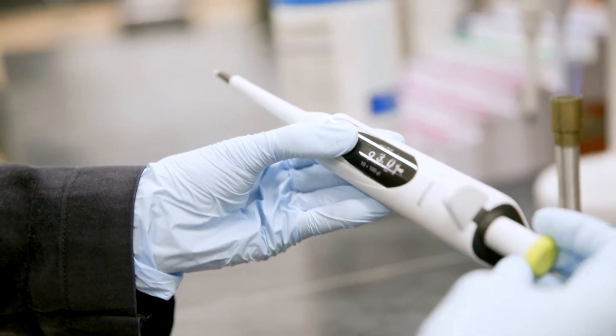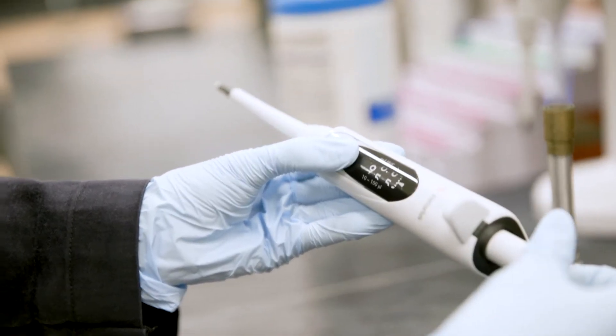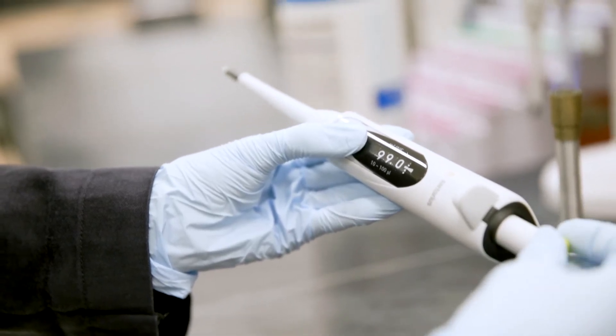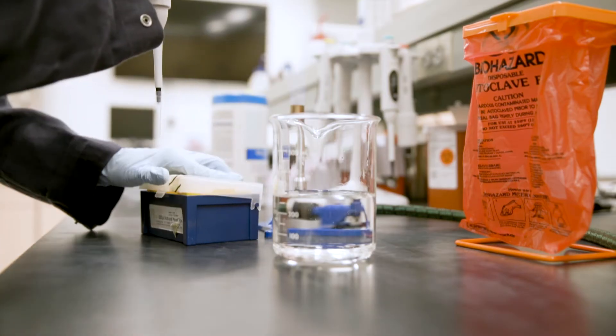For this particular pipette, you can adjust the volume using the small gray button and twisting the plunger. To operate this pipette,